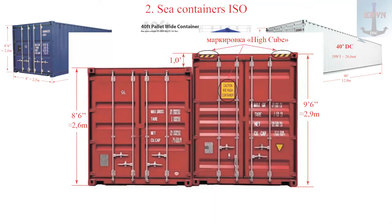High cube containers (HC): containers with increased overall height, similar in design to standard containers but taller. Unlike standard containers which are 2,591 mm (8 ft 6 in) tall, high cube containers are 2,896 mm (9 ft 6 in) high. High cube containers are mostly 40 or 45 feet; 20s are rare. Own weight: 3.9 tons.